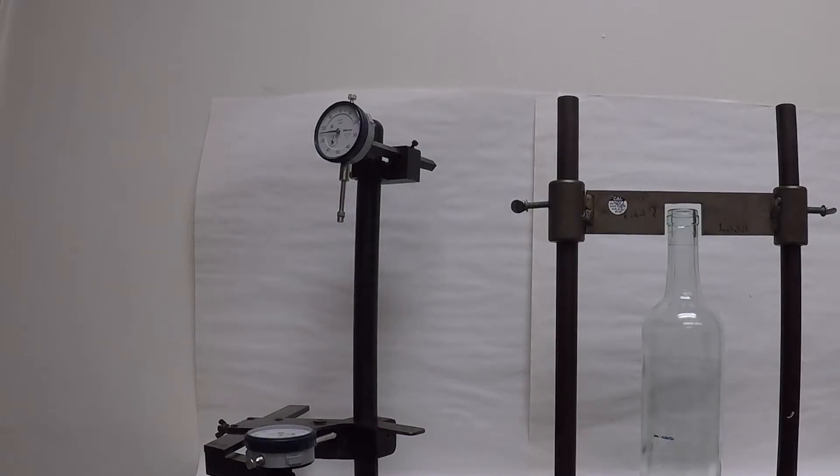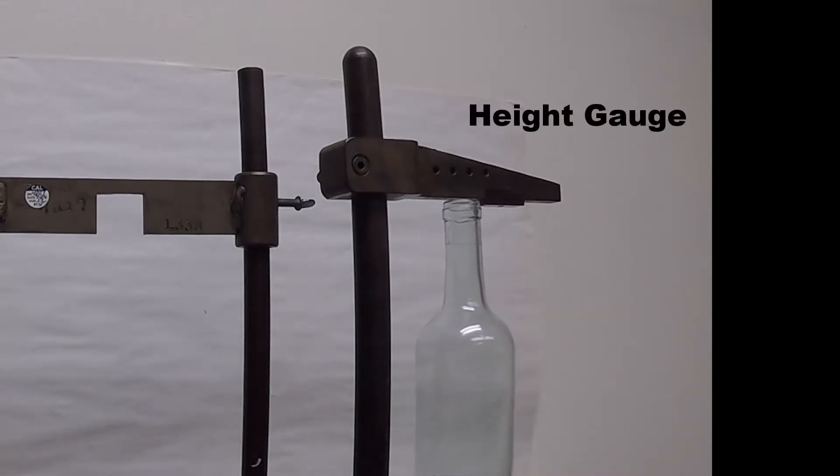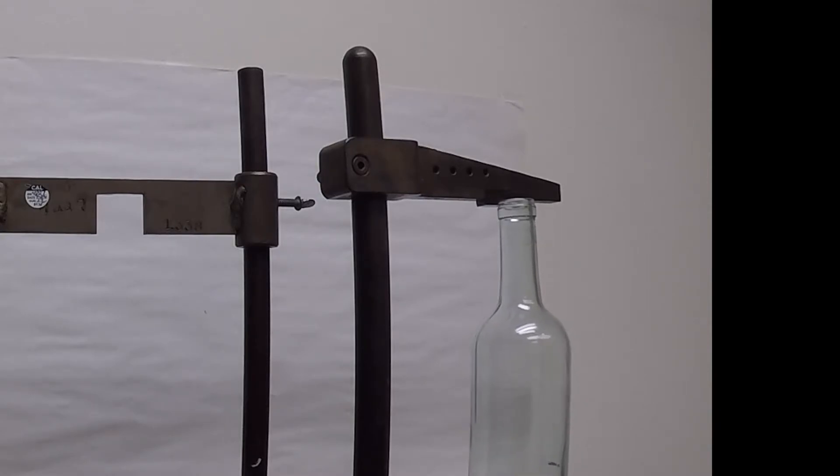Most plants have the leaner gauge that has the point. This gauge is a height gauge. The bottle should pass under to not be over height and not pass under this bar to be under height. You need to rotate the bottle to see that the entire finish doesn't go under.